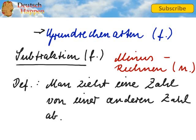How can we define Subtraktion? In German basically you could sum this up as Man zieht eine Zahl von einer anderen Zahl ab. And in English once again, we subtract one number from another number or figure if you want.